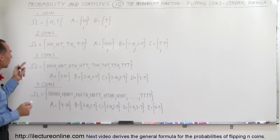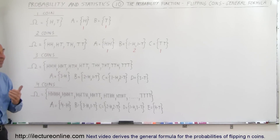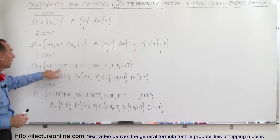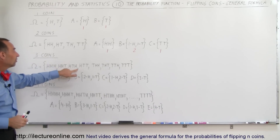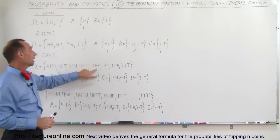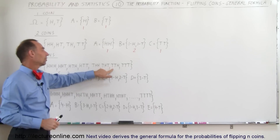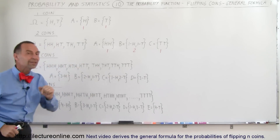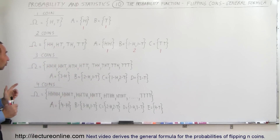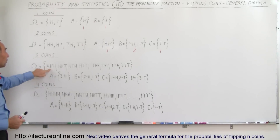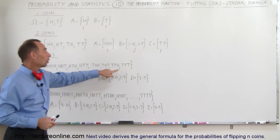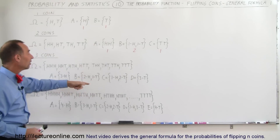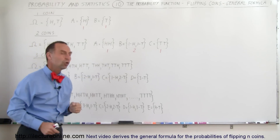What if you flip the coin three times? Now we have eight possible outcomes in the sample space: heads-heads-heads, heads-heads-tails, heads-tail-heads, heads-tail-tails, tail-heads-heads, tail-heads-tails, tail-tail-heads, and tail-tail-tails. We can have an event where all three are heads, an event where all three are tails, an event where two are heads and one is tails, and an event where one is heads and two are tails.